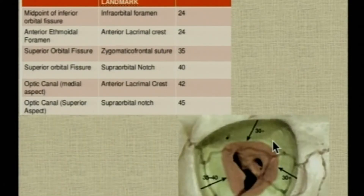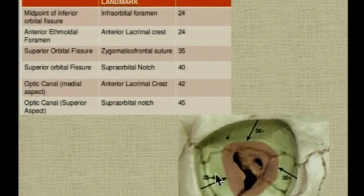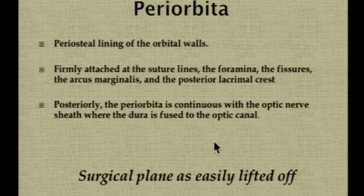The safe limit of dissection is up to 30 mm along the nasal and superior walls, and 35 to 40 mm along the lateral and inferior walls. The periorbita is the periosteal lining of the orbit, firmly attached to suture lines and fissures, but it provides a useful surgical plane as it can be lifted off easily.